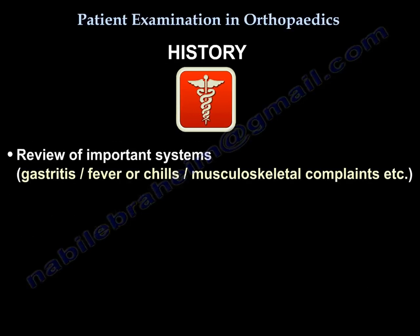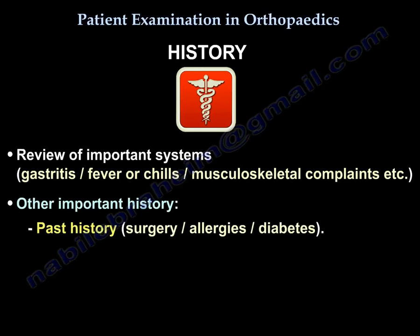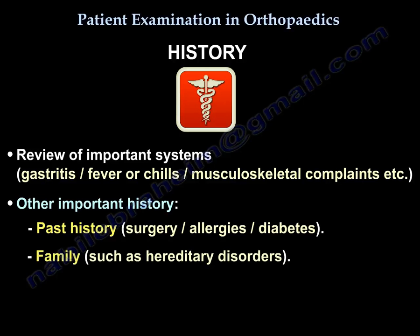Review other important systems: does the patient have gastritis, fever or chills, or other musculoskeletal complaints? Other important history notes include past history — did the patient have any previous surgery? Does he have allergies or diabetes? Family history, such as any hereditary disorders.